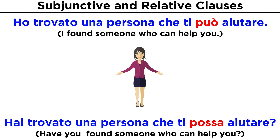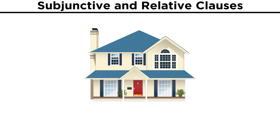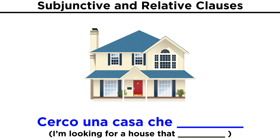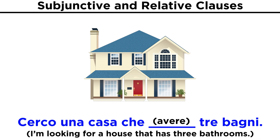Let's put this to use. Say you are looking to buy a house, and there are features that you hope your house will possess. For each thing you want, you could construct a sentence that starts with a set phrase, and then we can use the given information with an infinitive listed to write the correct form of the subjunctive and finish the sentence. For example, if you hope to find a house with three bathrooms, you could say…